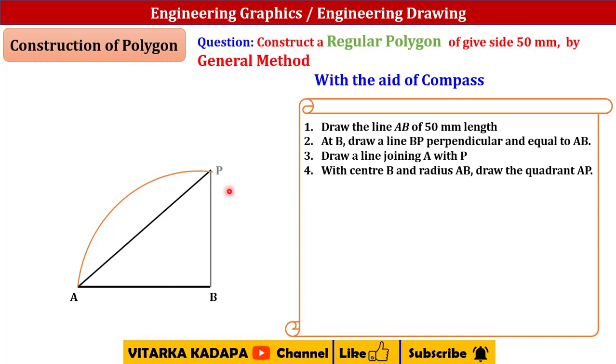After drawing this quadrant, draw a perpendicular bisector for AB. Perpendicular bisector means for a particular line, it will be exactly at the center. If I apply the concept of dividing the line into two equal parts, that will become a perpendicular bisector for AB.